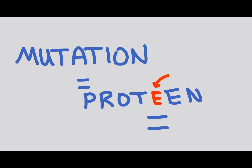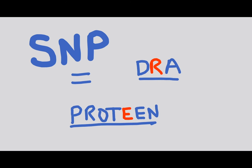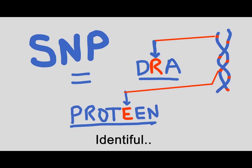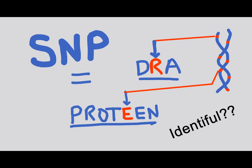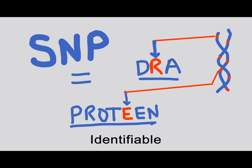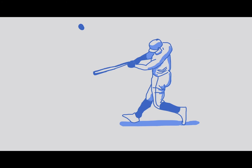For a recap: a mutation is a misspelling in your DNA that can cause a detrimental or beneficial phenotype, while SNPs are misspellings in your DNA that are primarily used as identifiable markers.